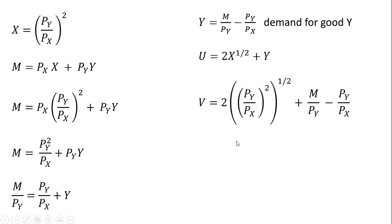We can simplify this a little bit. This one-half times two up here, that will cancel. And we have our indirect utility function.